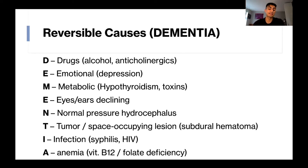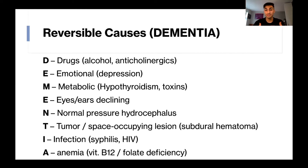And lastly, A is for anemia — specifically vitamin B12 or folic acid deficiency leading to a megaloblastic anemia. Basically with anemia, you're not going to be able to form red blood cells properly, so you get less capacity to carry oxygen to the brain, and this hypoxia in the brain will result in the dementia symptoms.